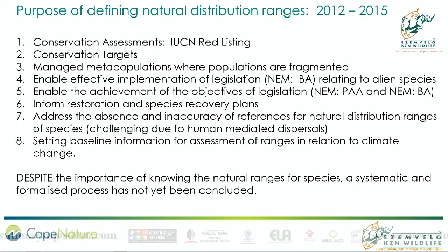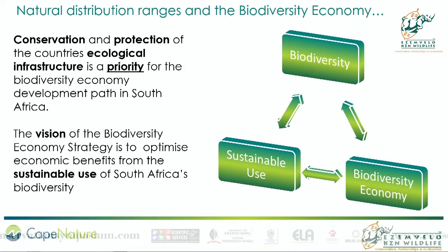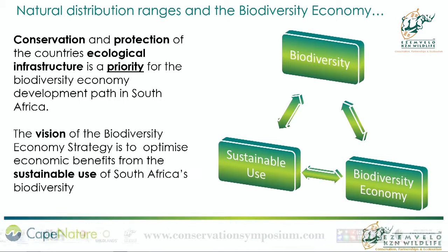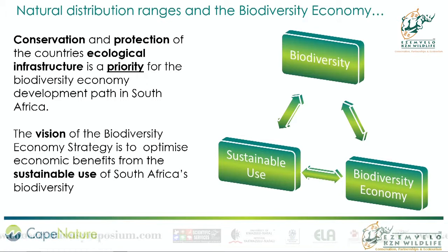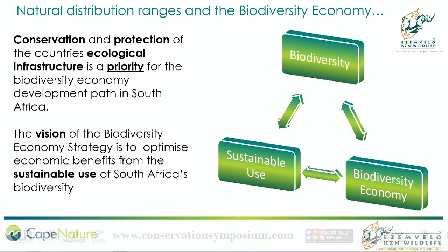Despite the importance of all the things we've listed, we actually haven't yet concluded this set. They are now in the final phase where they will be gazetted for public participation, and hopefully we can move forward from there. Relating this to the biodiversity economy: the priority is to look at conservation and protection of the country's ecological infrastructure. Mammal distribution maps are a component of that ecological infrastructure. The vision of the biodiversity economy strategy is focused on optimizing economic benefits from sustainable use — which has to be conservation-first — and that's our interpretation.